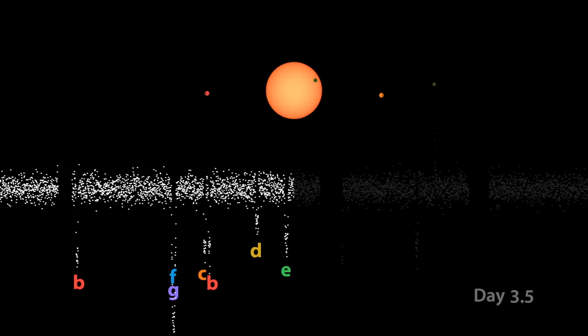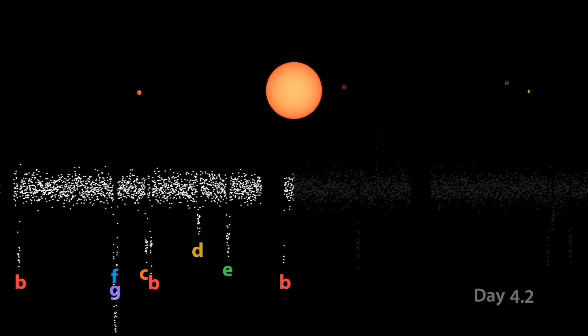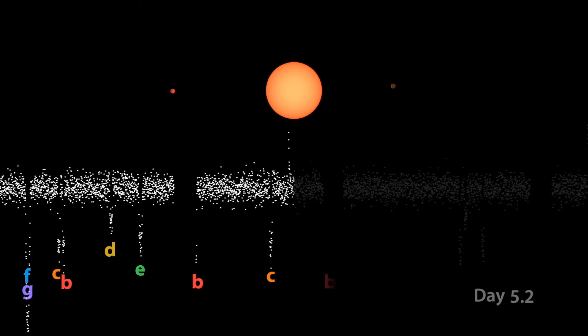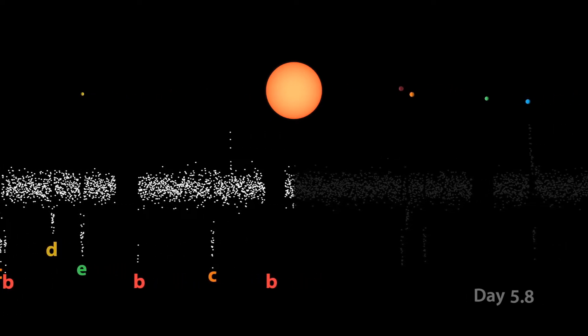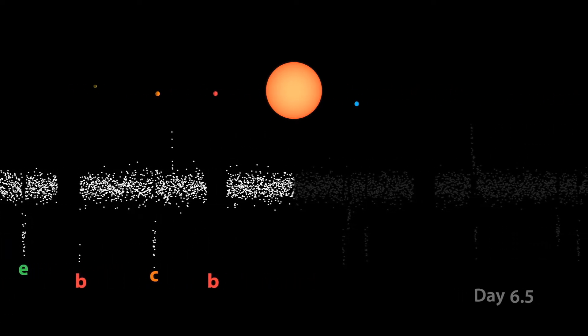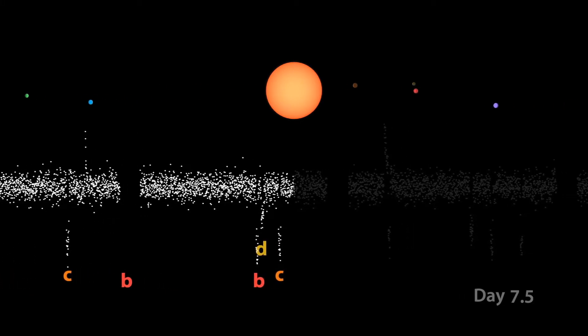Astronomers can detect planets around stars by carefully watching for tiny, repeating dips in brightness. If orbiting planets are lined up just right, when they pass in front of the star, they block a tiny bit of its light.